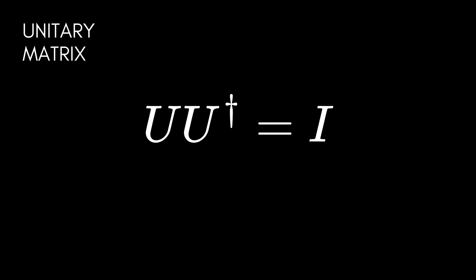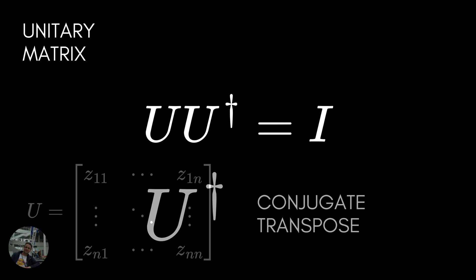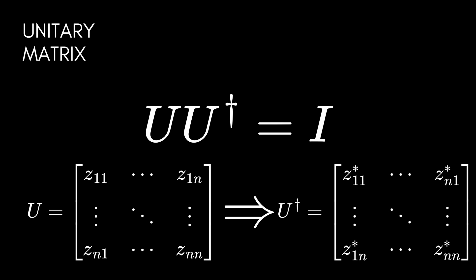Operations on qubits by quantum gates are unitary matrices. A unitary matrix is a matrix such that if we multiply U by its conjugate transpose, we get the identity matrix. In this equation, U-dagger is the conjugate transpose of matrix U. By transpose, I mean we replace the rows and columns of the matrix, and by conjugate, I mean we change every complex number to its conjugate.